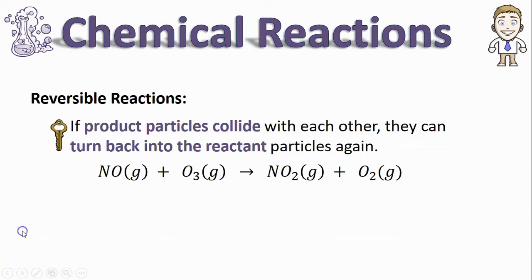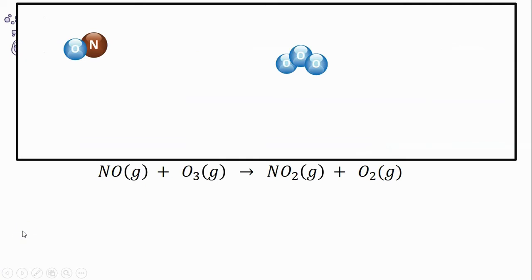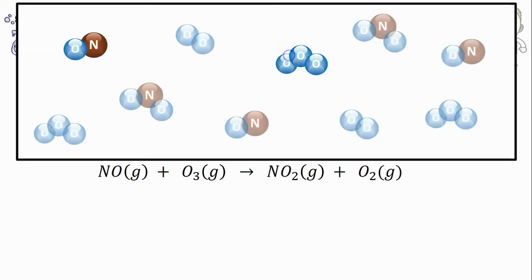So let's bring back the closed container and have a slightly more realistic view of what's happening with this reversible reaction. We saw how it works with just one single NO and one single O3. But in real life, reactions don't happen with just one of each reactant.